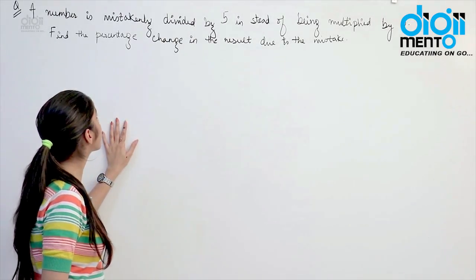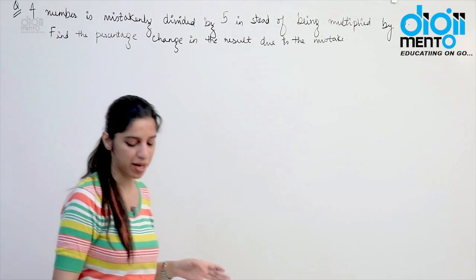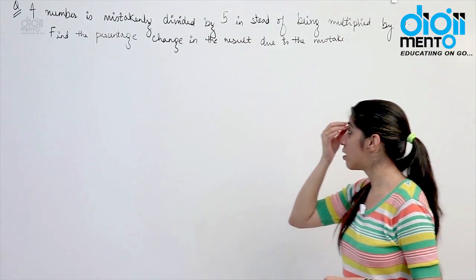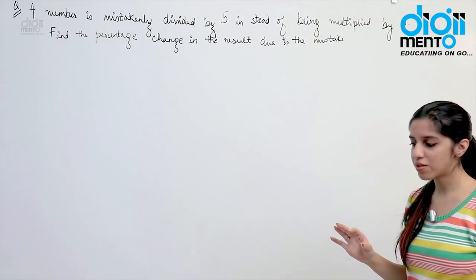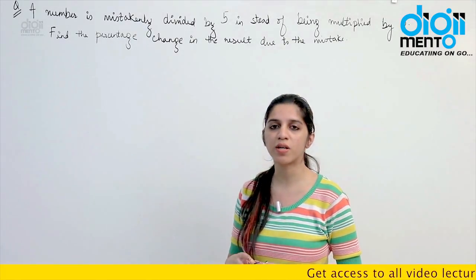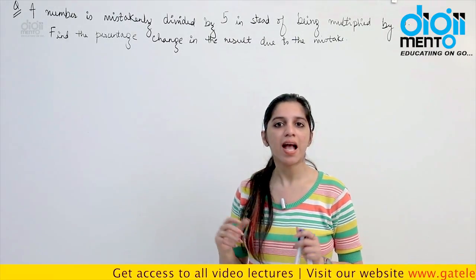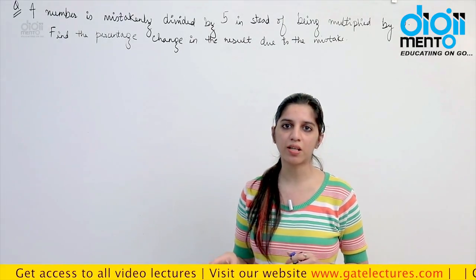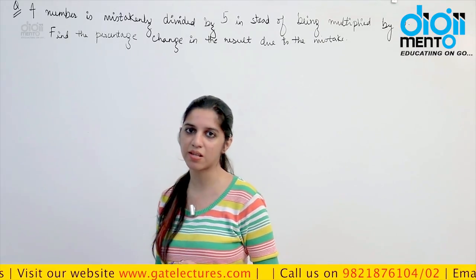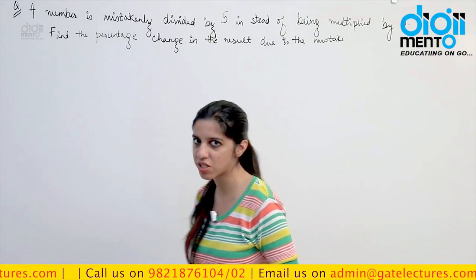Look at the first question. We are given that a number is mistakenly divided by 5 instead of being multiplied by 5, and they are asking you to calculate the percentage change in the result. Whenever we are dealing with percentages, it is better to consider the number as 100. Since they are asking in percentage only, any number you consider is not going to make a difference — even if you consider some variable, it will ultimately cancel out. So it's better to consider 100 to make calculations easier.